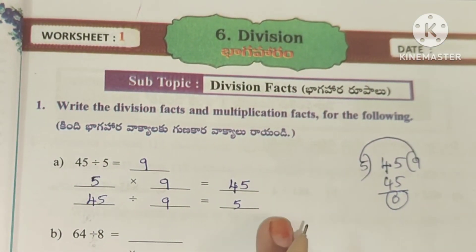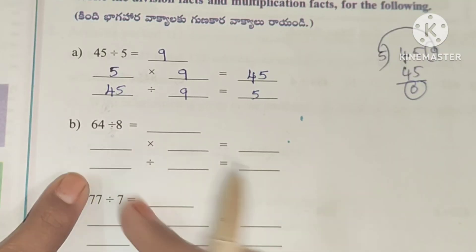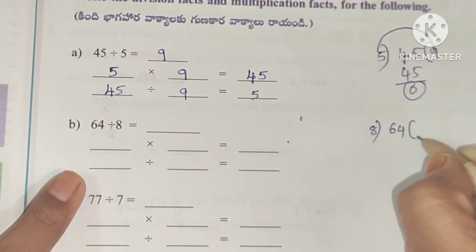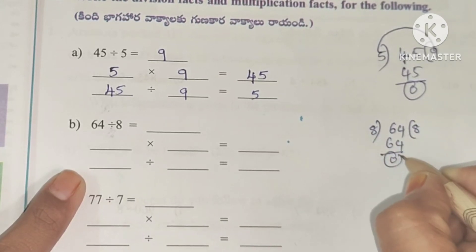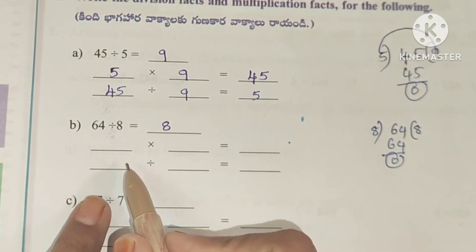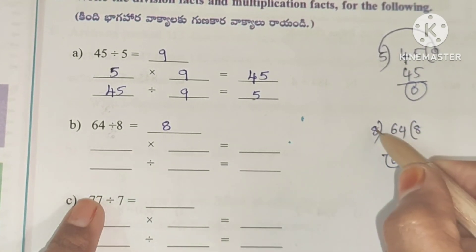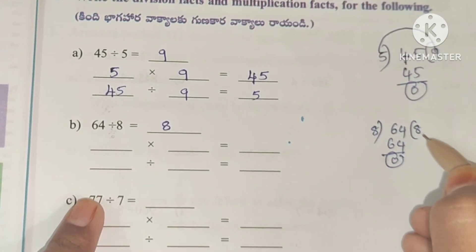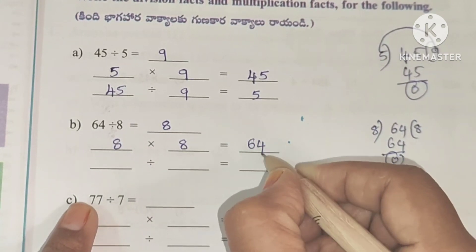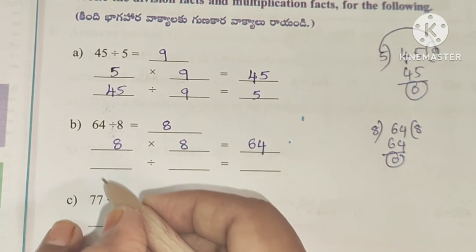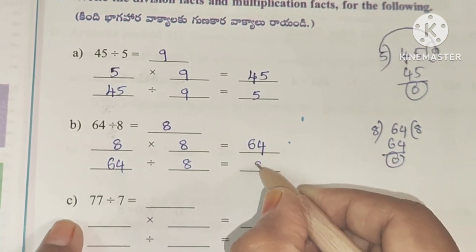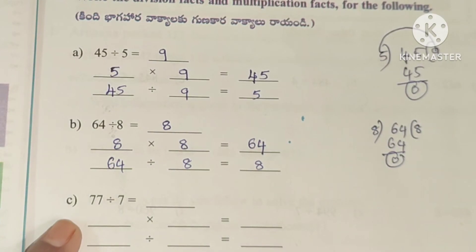Second one, B: 64 divided by 8. We know 8 eights are 64, so 64 divided by 8 equals 8. For multiplication facts: divisor into quotient — 8 into 8 equals 64. And same here: 64 divided by 8 equals 8.